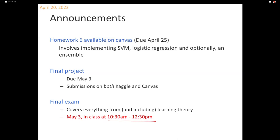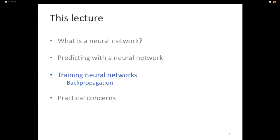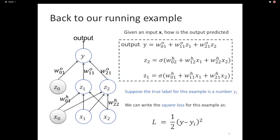Okay, let's continue where we left off — we were talking about neural networks. In the last lecture we looked at what a neural network is, described how the prediction process works, and just got started talking about training. We didn't touch backpropagation yet. What we did was set up this loss minimization framework. Our running example is a two-layer neural network: two inputs, one hidden layer with two units, and one output for regression.